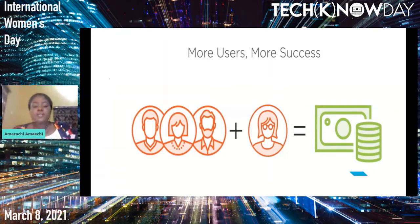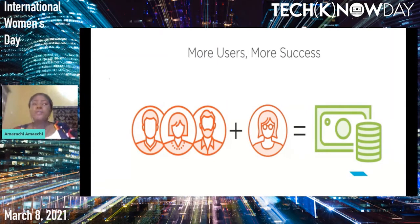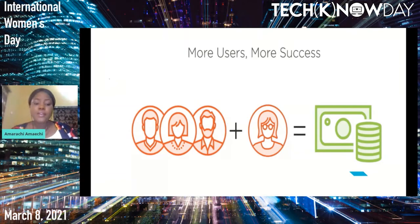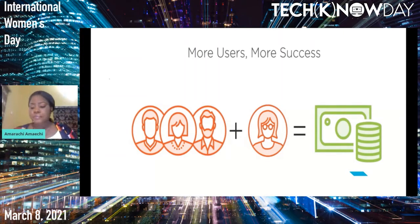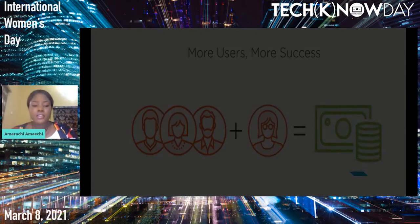Looking at this image, it shows three able-bodied users. When you make your application accessible for everyone, an additional person — in this case a blind person — is also able to use it. Because we made our application accessible, that person adds to your user base. More users is equivalent to more success and more revenue.